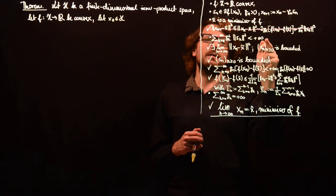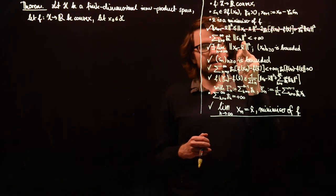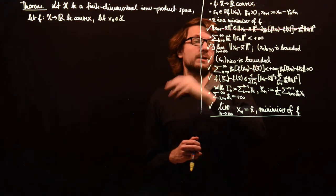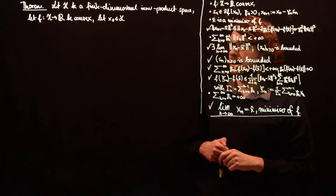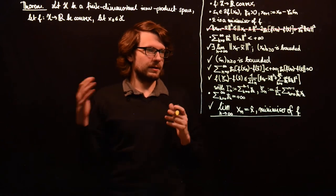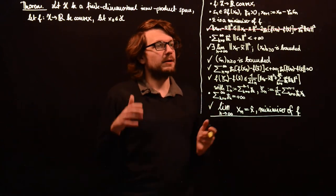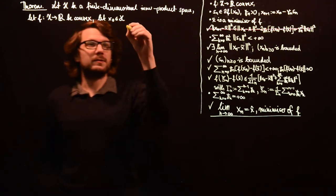And then we want to determine the value of gamma_k times norm of s_k in advance because then we know in advance that this summability condition will be satisfied. So, we want to set gamma_k times norm of s_k just for example t_k.